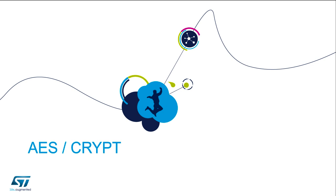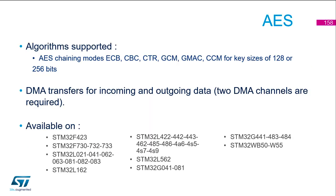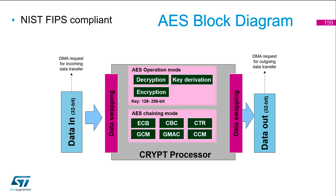Let's talk about IP for the hardware acceleration of symmetric cryptography. We've got two: AES and CRYP. Let's start with AES. AES supports chaining modes ECB, CBC, CTR, GCM, GMAC, and CCM, and for key sizes of 128-bit or 256-bit. DMA transfer is possible for incoming and outgoing data. It's available on the list of STM32 computed for you, but please check our site for new parts. This IP is NIST FIPS compliant.